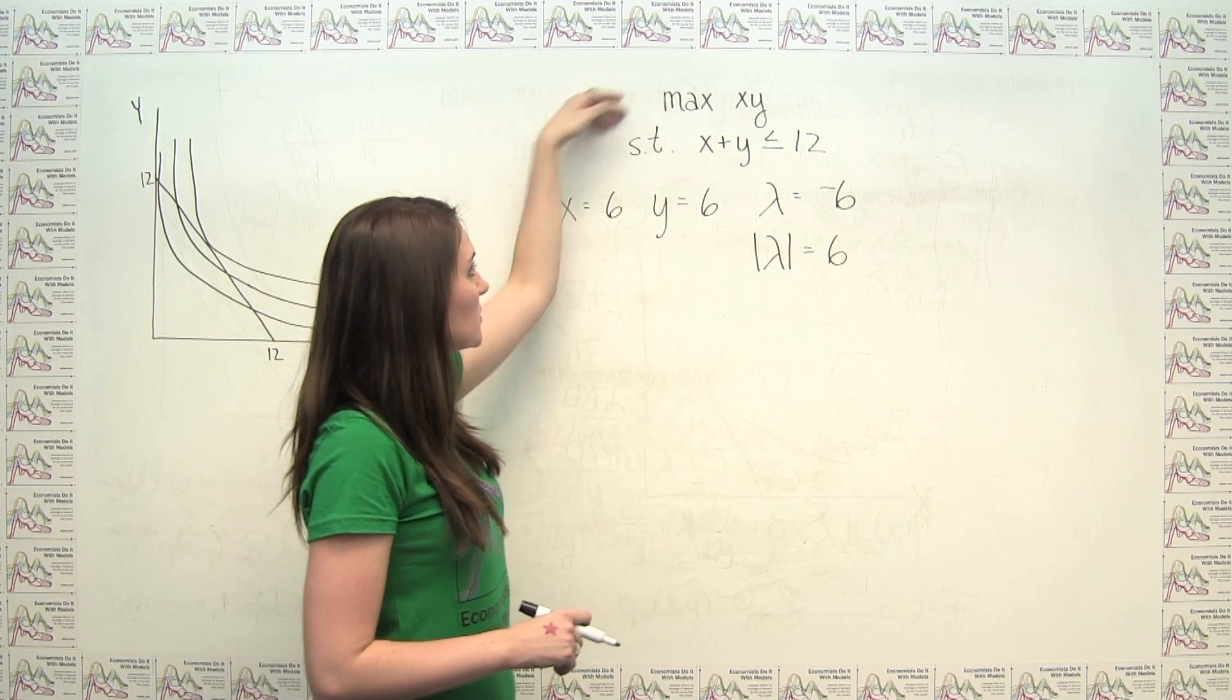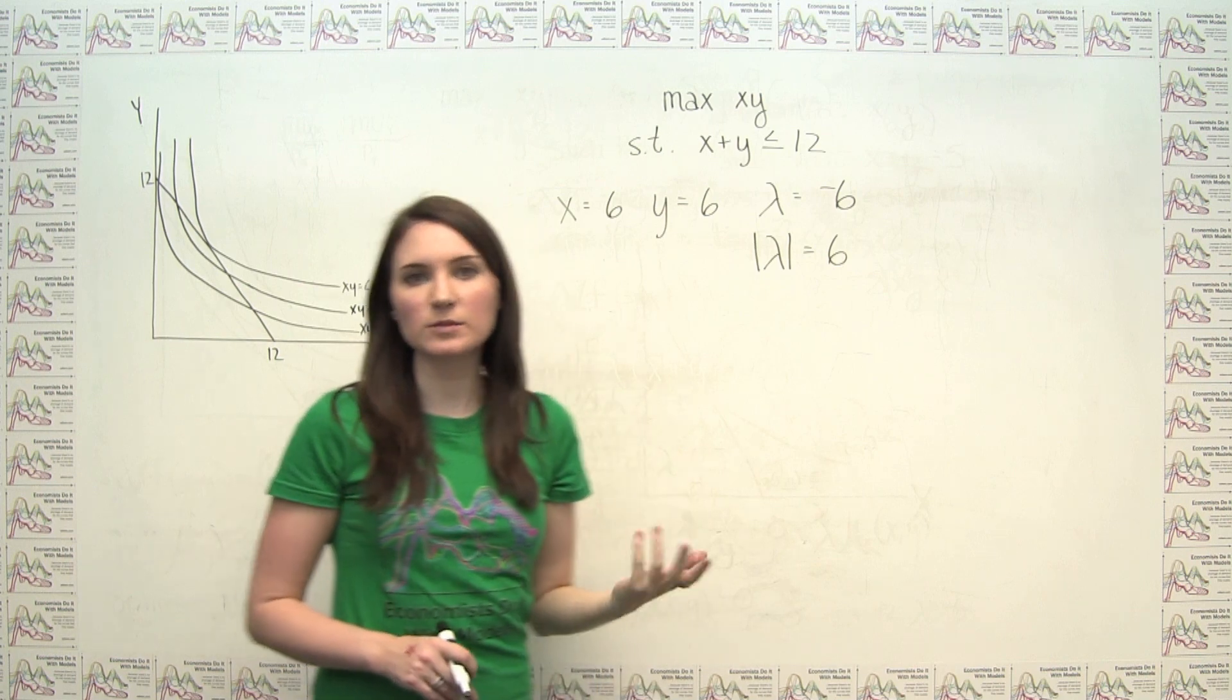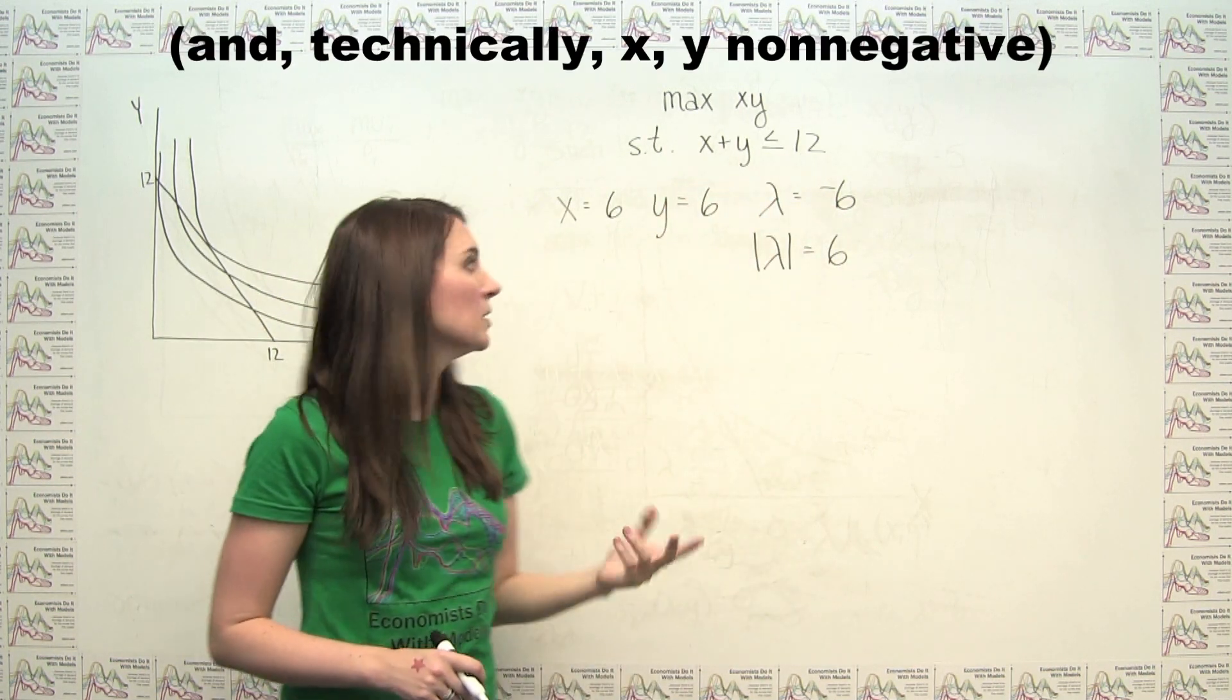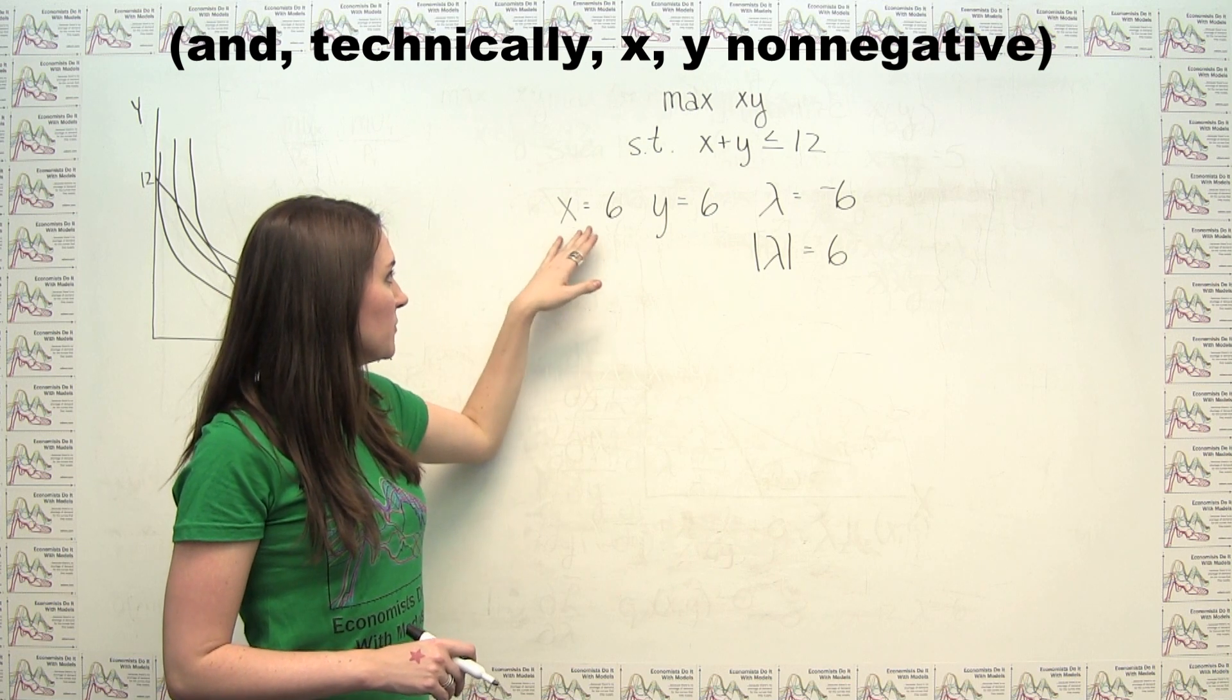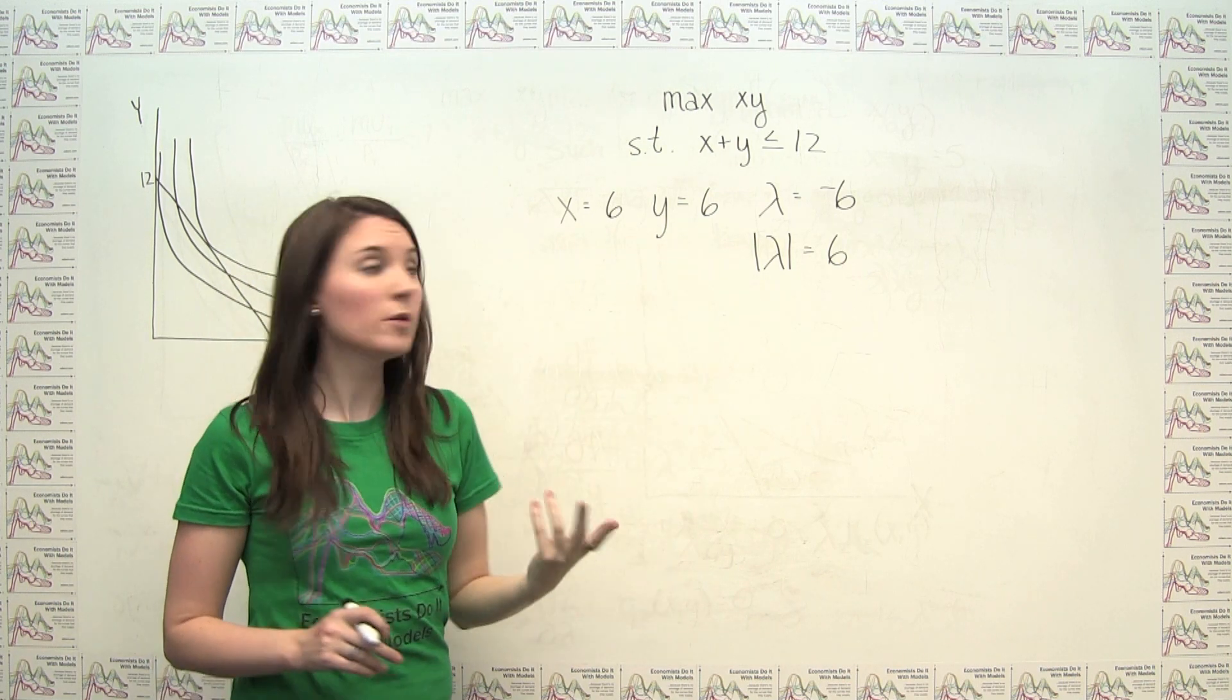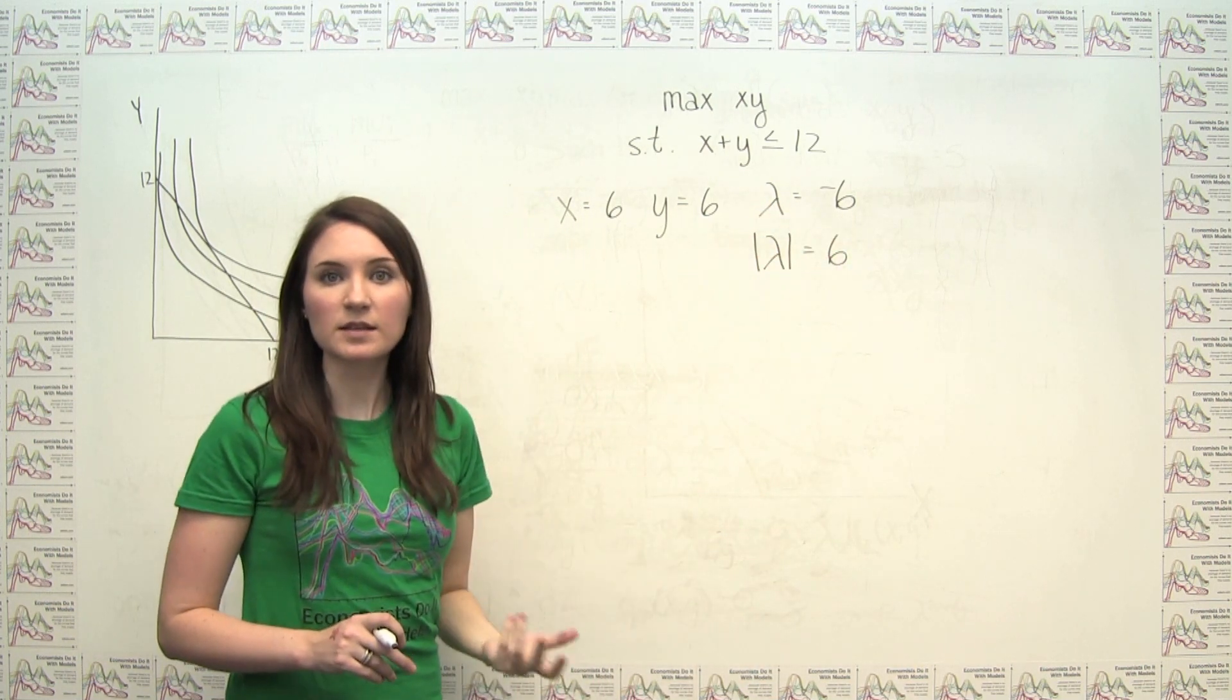We've just shown that our solution to this problem of maximizing x times y subject to the constraint that x plus y has to be less than or equal to 12 yields a result of x being 6, y being 6, which is pretty straightforward, and also a result of a lambda of negative 6.